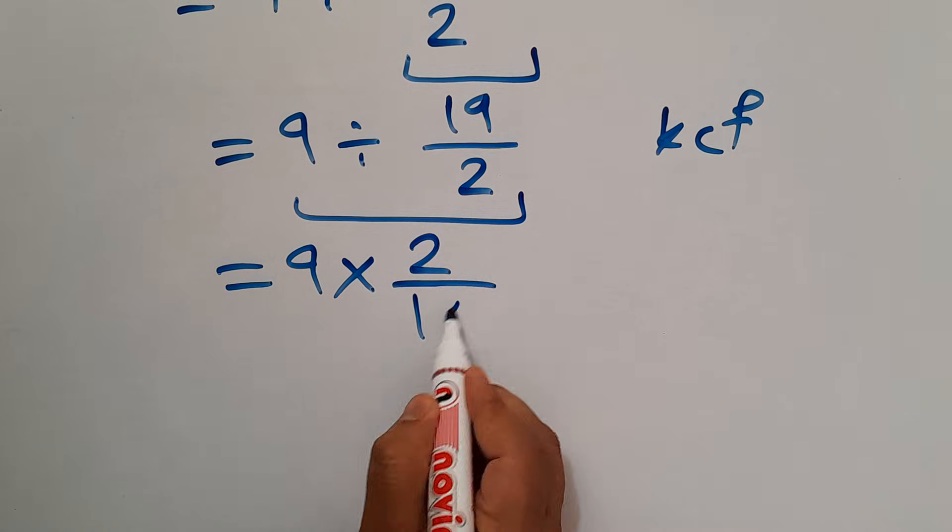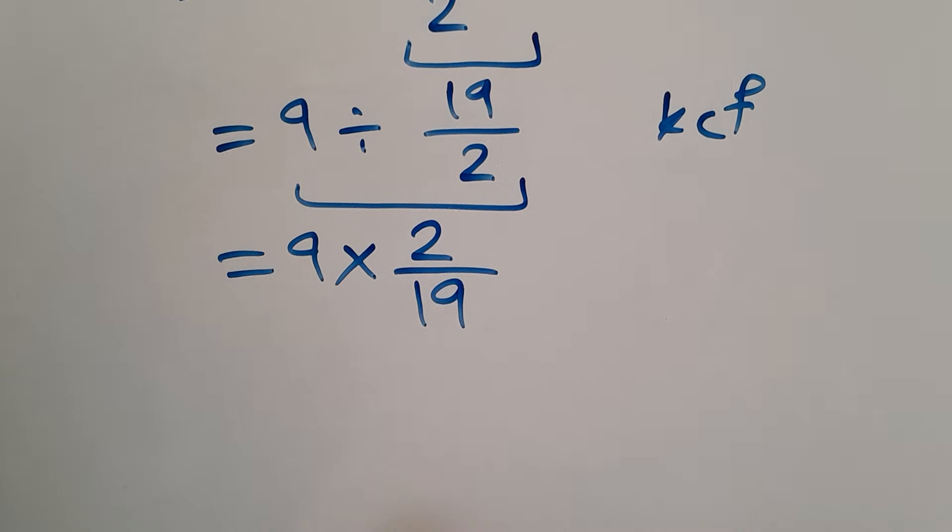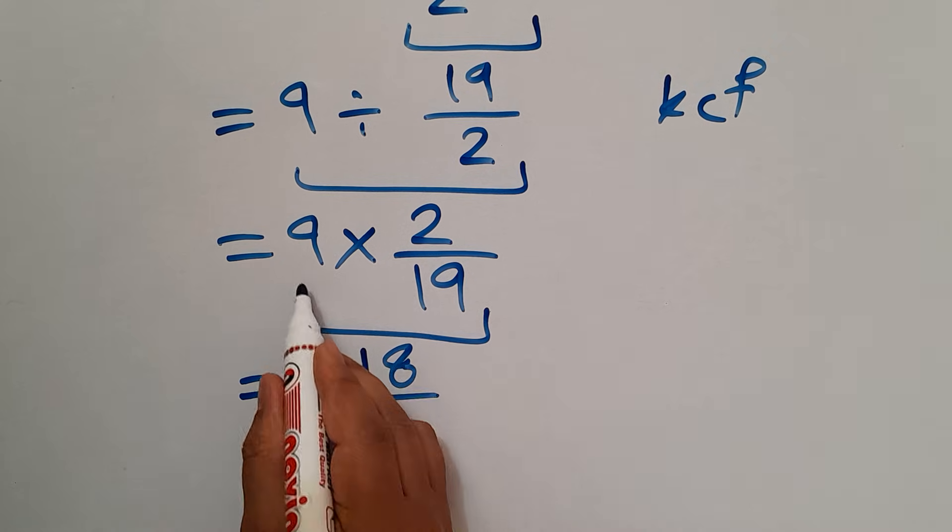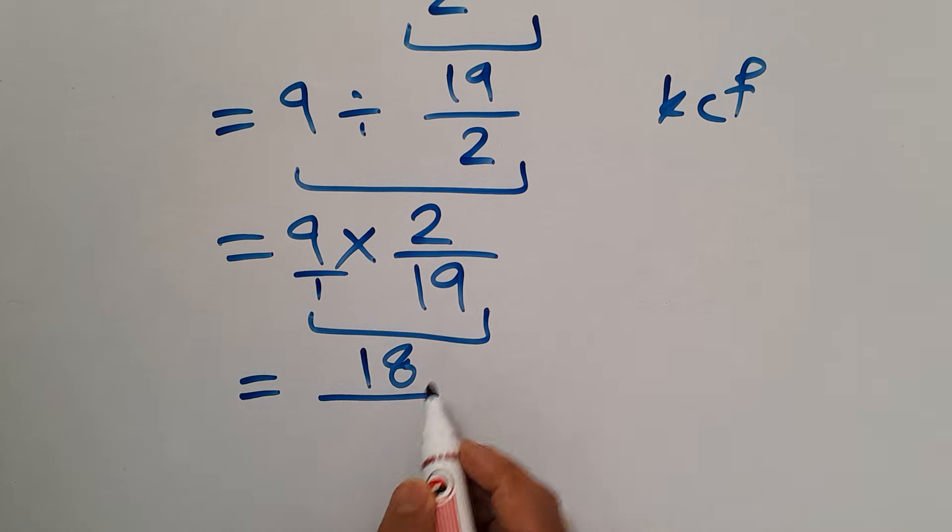This is equal to 9 times 2 equals 18, and 18 over 1 times 19 which equals 19. So our final answer to this problem is 18 over 19.